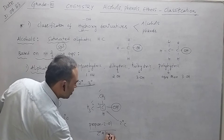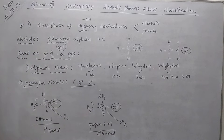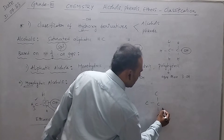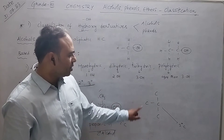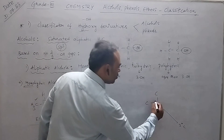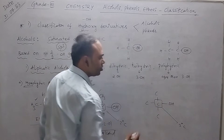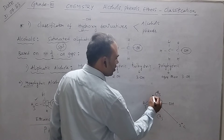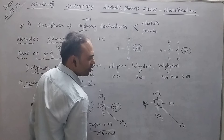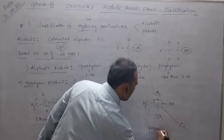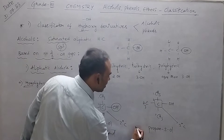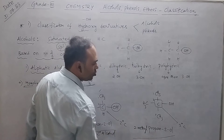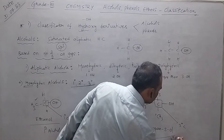For a tertiary alcohol, we take a tertiary carbon — which is surrounded by three different carbons — and connect the OH group to it. The IUPAC name for this compound is 2-methylpropan-2-ol. This is considered a tertiary alcohol.